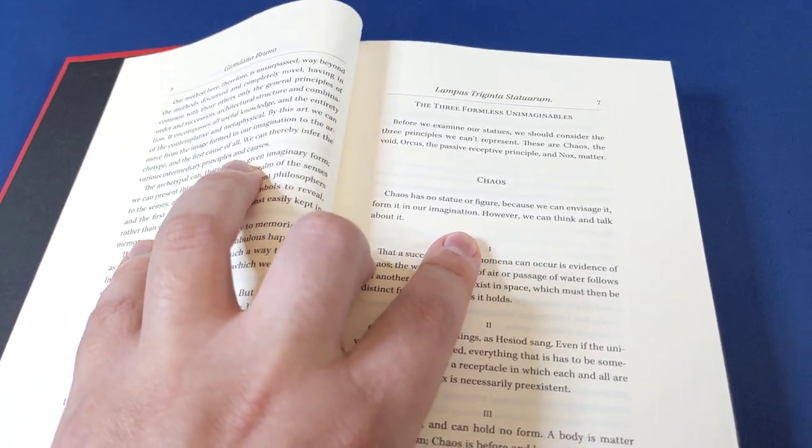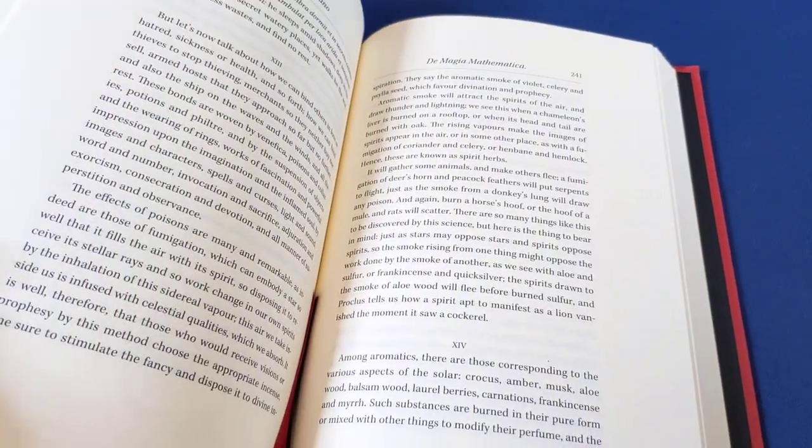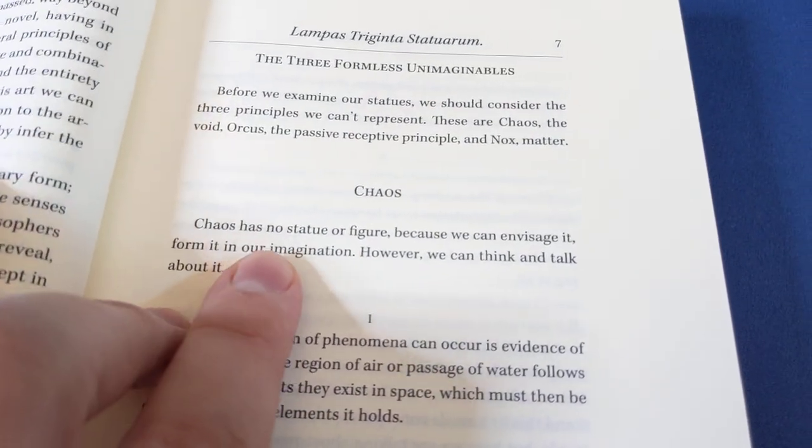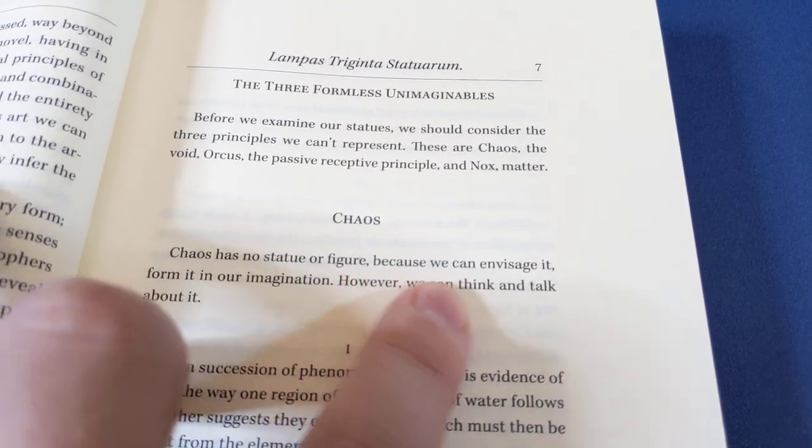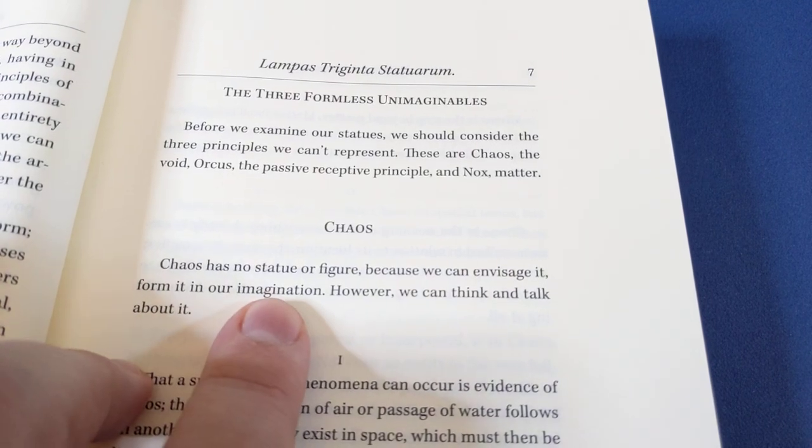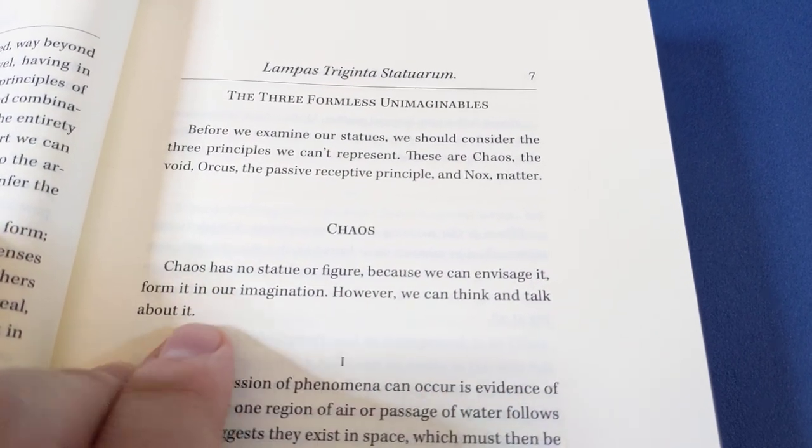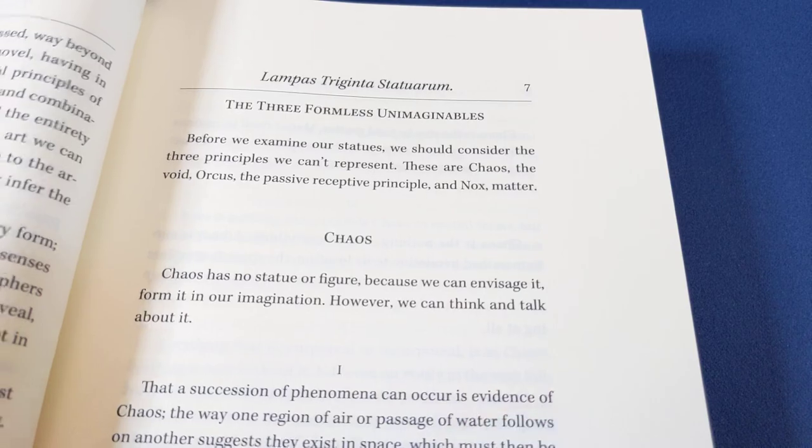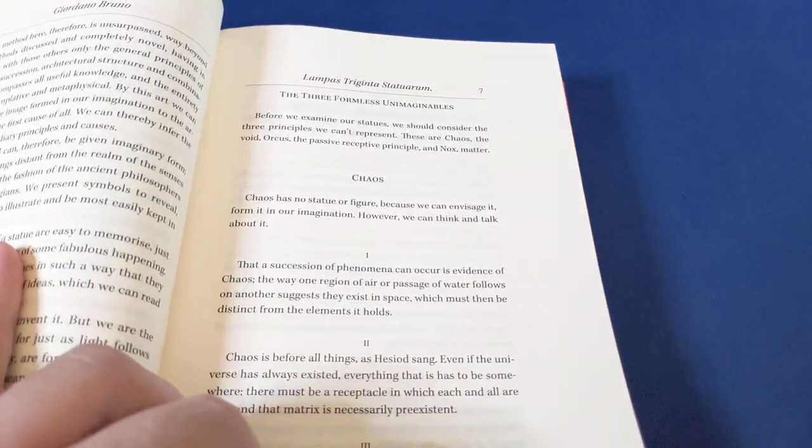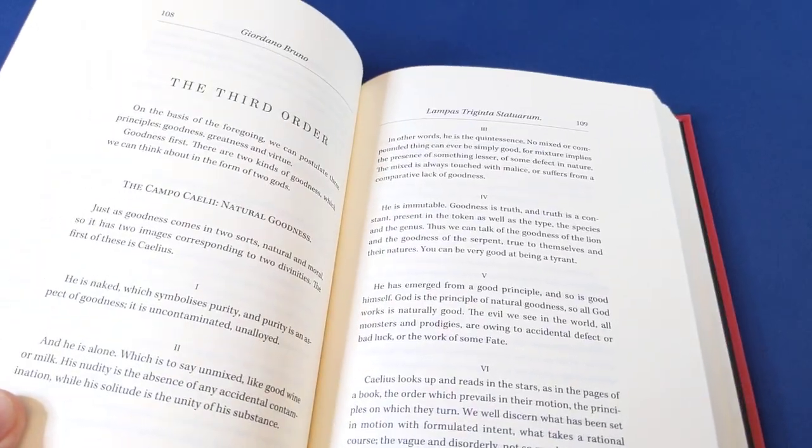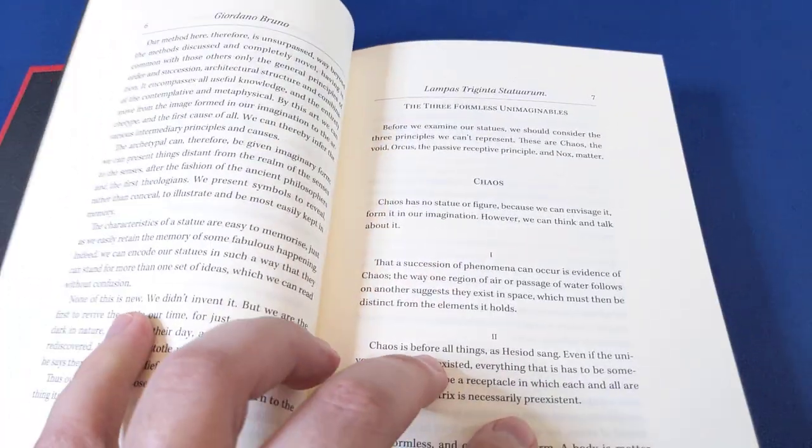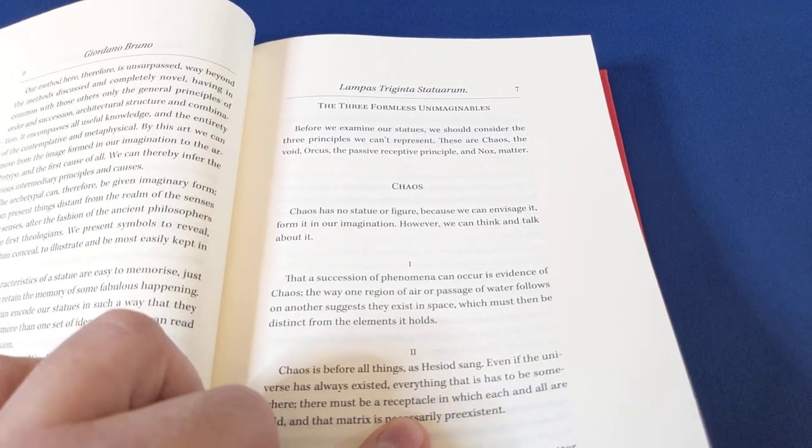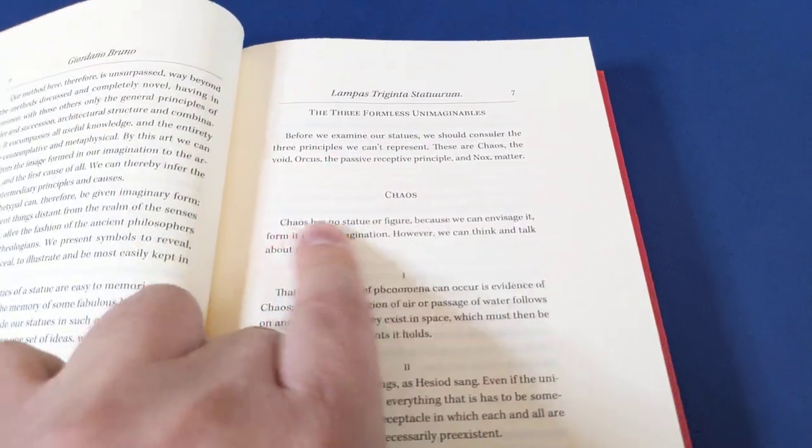His point really here is to give you an idea of how to divide any concept into 30 constituent parts by giving you plenty of examples. But I found a few typos, which mostly weren't any problem, but in this very first one, let me read this for you: 'Chaos has no statue or figure because we can envisage it form it in our imagination however we can think and talk about it clearly.' Here 'can' should have been 'can't'.